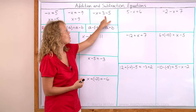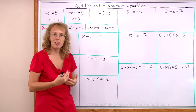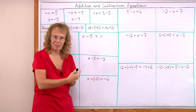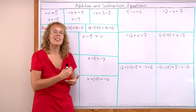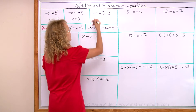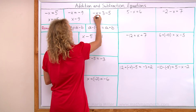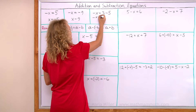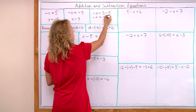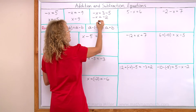For an equation like negative x equals 3 minus 5, all we need to do is first calculate 3 minus 5, which is negative 2. So we get an intermediate step: negative x equals negative 2.